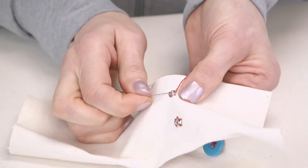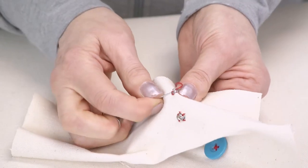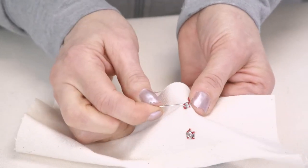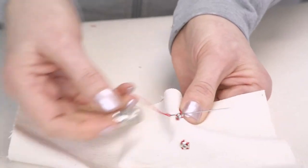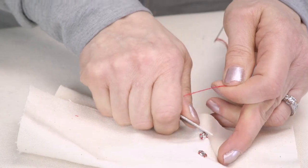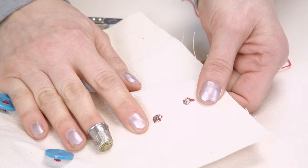And now we do our three little tight back stitches to secure the thread. You can see how I'm using my thimble to push my needle through. And now we have both sides of the snap applied.